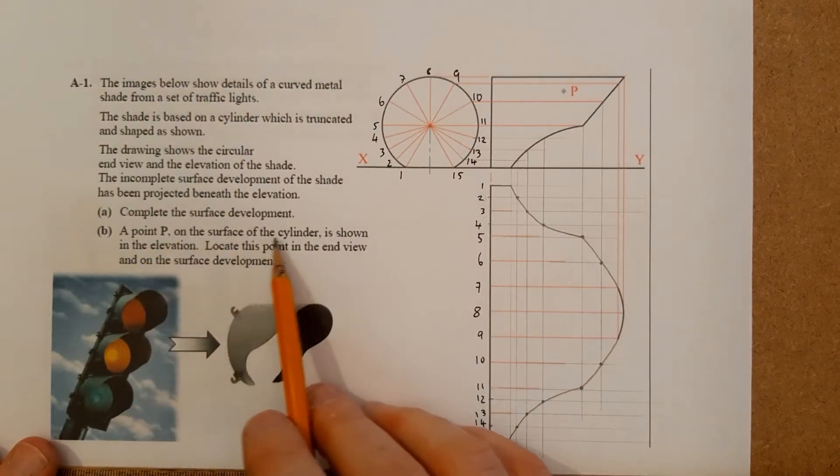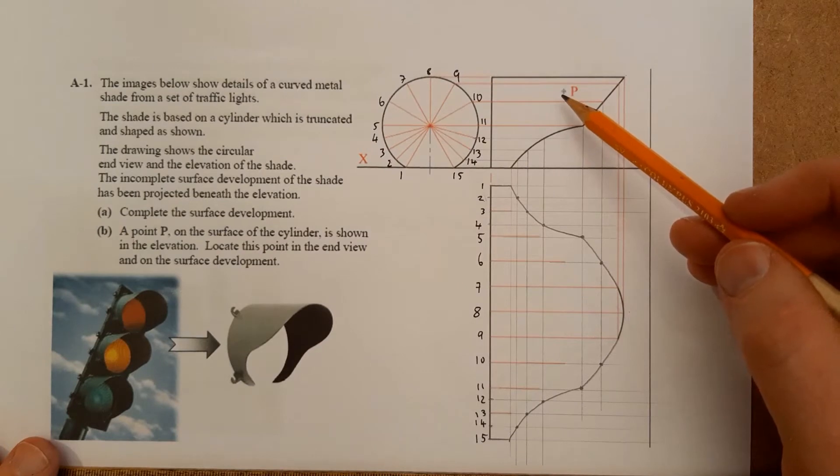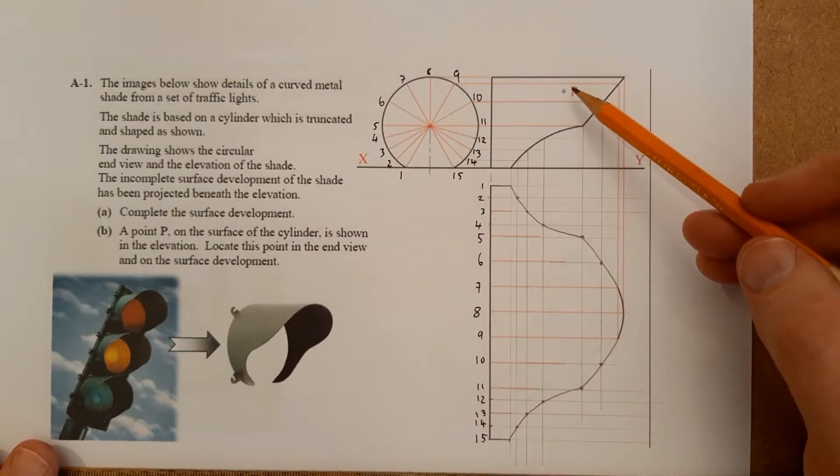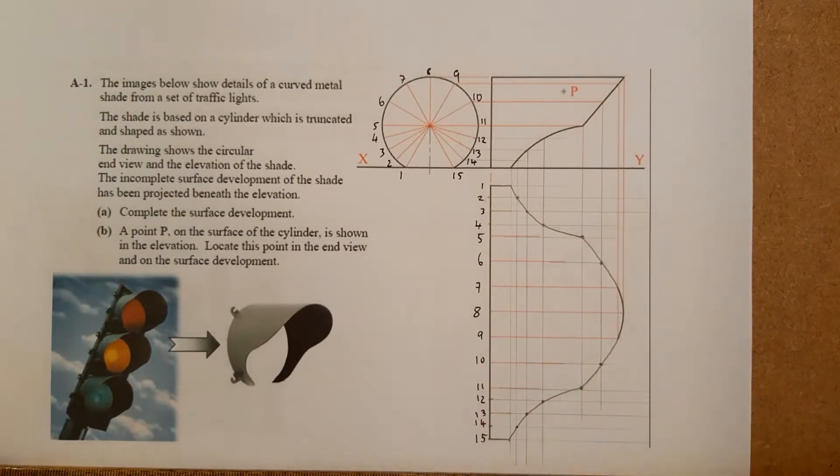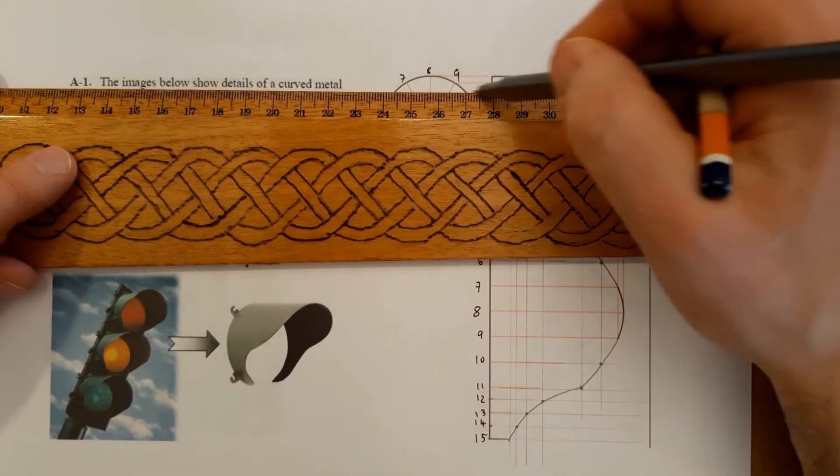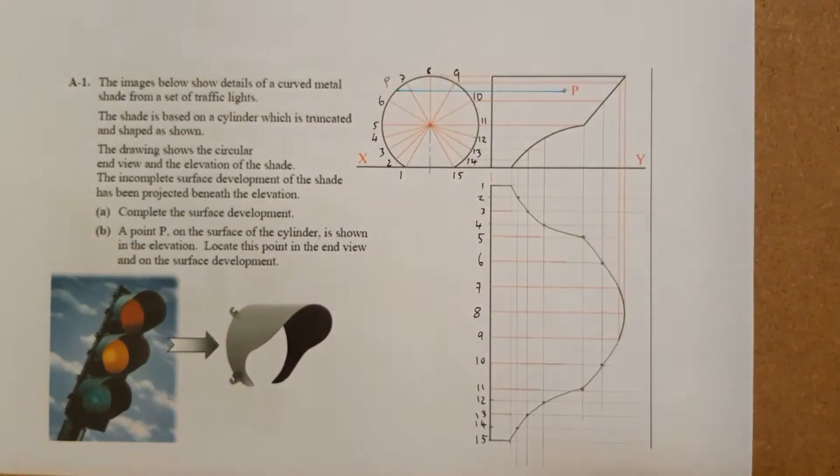Second thing, a point P on the surface of the cylinder shown in the elevation here. Locate this point in the end view and on the surface development. It doesn't say which side it's on - front or back - I'm going to assume it's on the near side here. So what we've got to do is locate it in the end view. That's going to get my P over there.